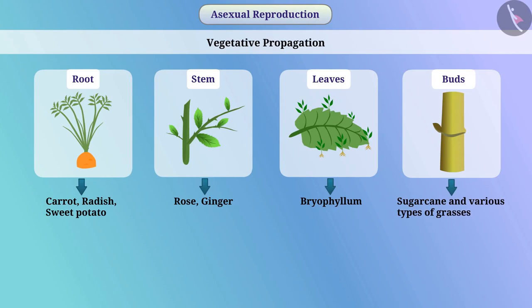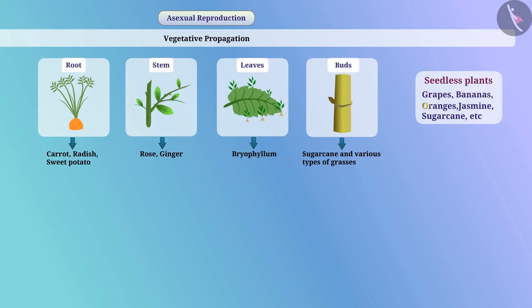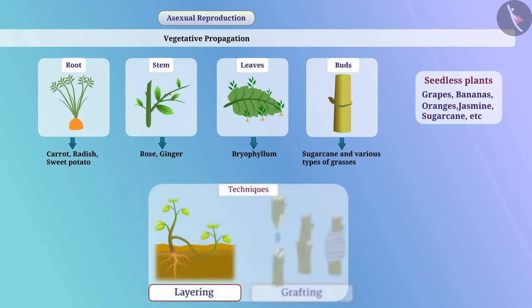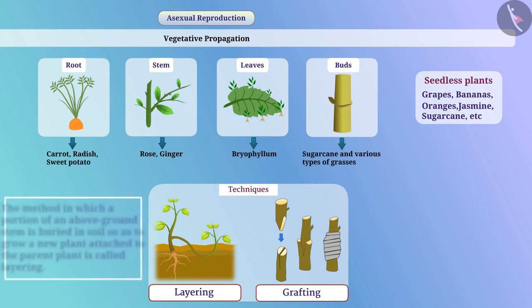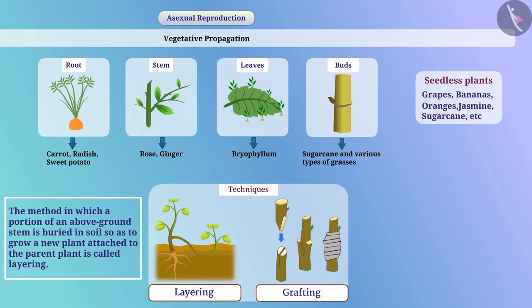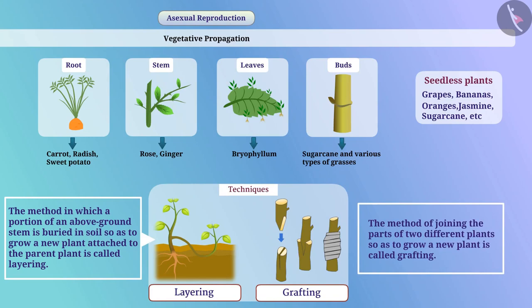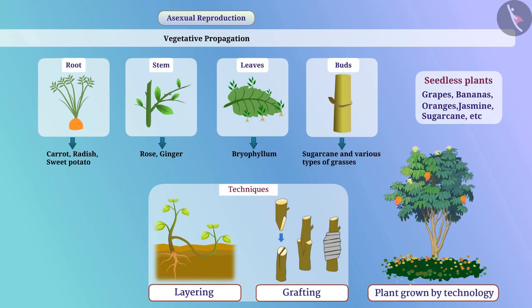Sugarcane and various types of grasses can be produced from buds. Vegetative propagation can be used in agriculture for the production of grapes, bananas, oranges, jasmine, sugarcane, etc. Techniques like layering and grafting can be used. Layering is the method in which a portion of an above-ground stem is buried in the soil to grow a new plant attached to the parent plant. Grafting is the method of joining parts of two different plants to grow a new plant. Flowers and fruits can be obtained in less time from plants grown by such techniques than from plants grown by seeds.